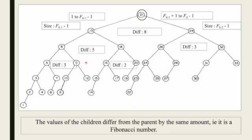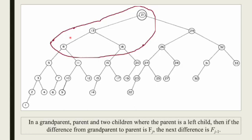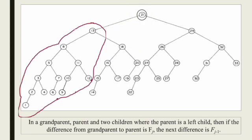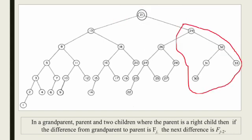Looking at the tree structure: the difference from grandparent to parent is FJ. The difference from parent to left child is FJ-1. The difference from parent to right child is FJ-2. For example, one difference is 5 on the left side and 3 on the right side, then 3 and 2, then 2 and 1. For the right child, the difference is 1. This unequal division is the key characteristic of Fibonacci Search.